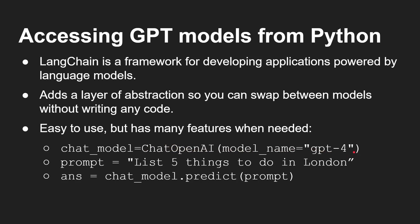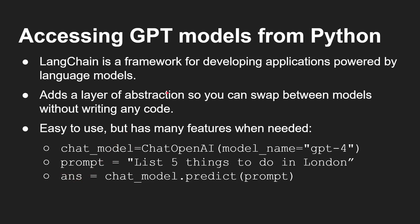You then create your prompt and then you basically say, send this prompt and give me the answer, which will come back in this string here as 'answer'. So three lines of code and you're up and running.